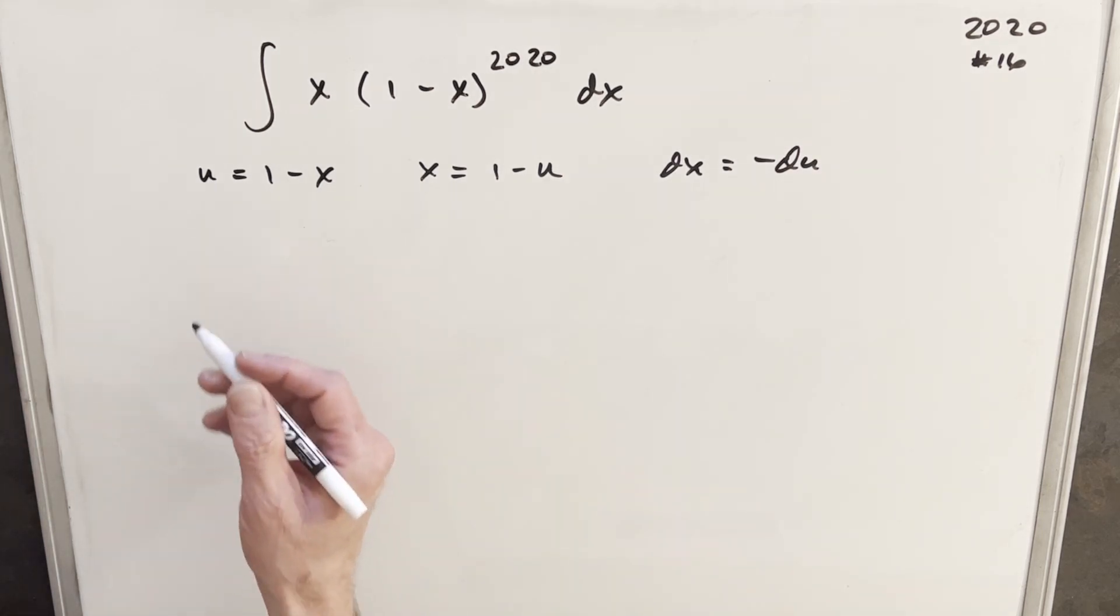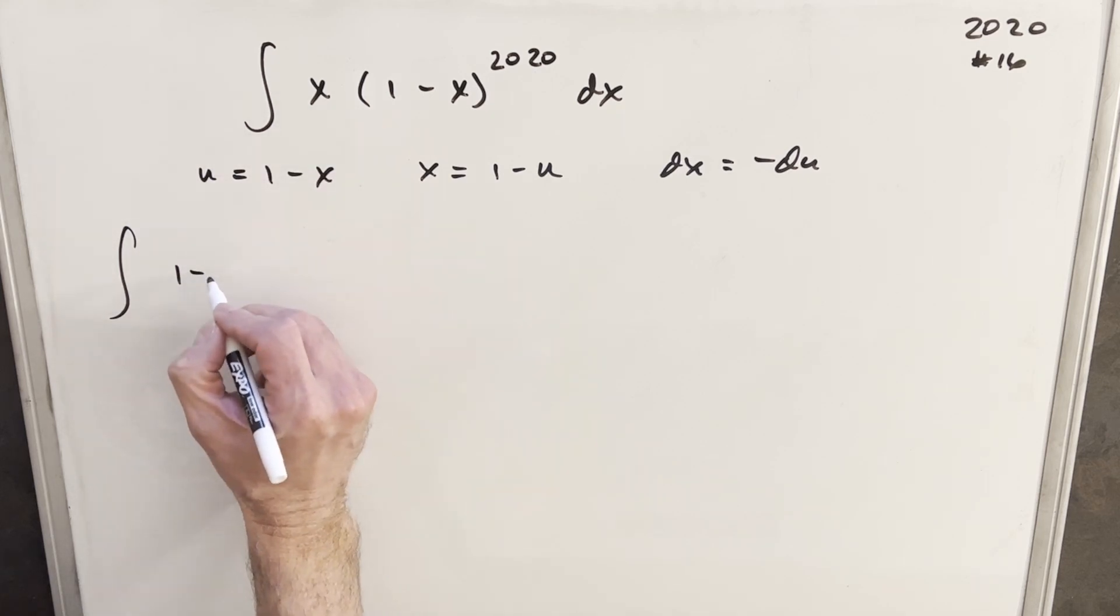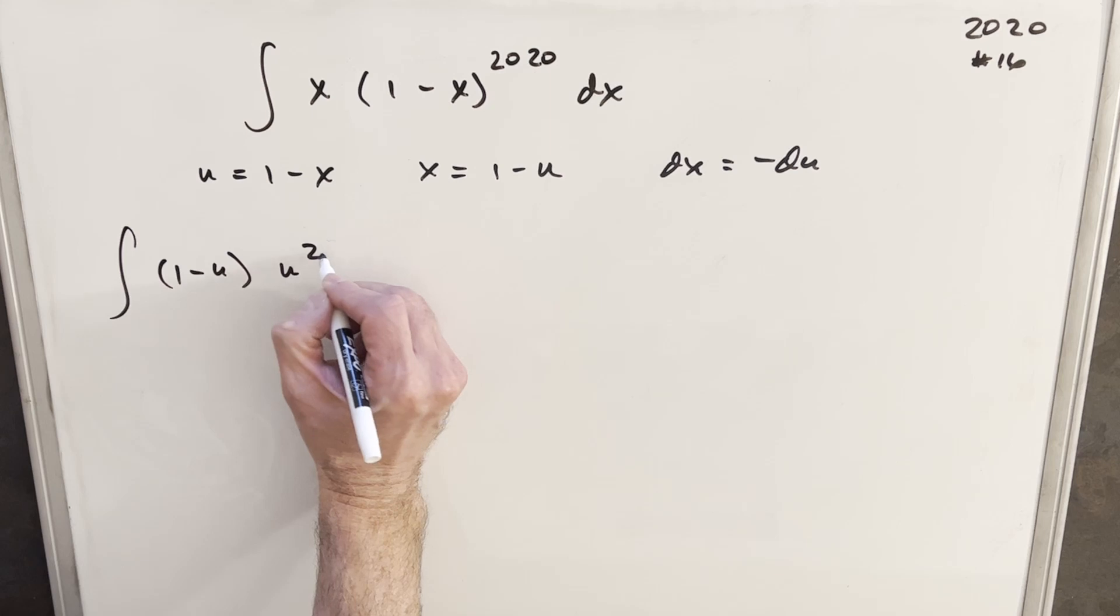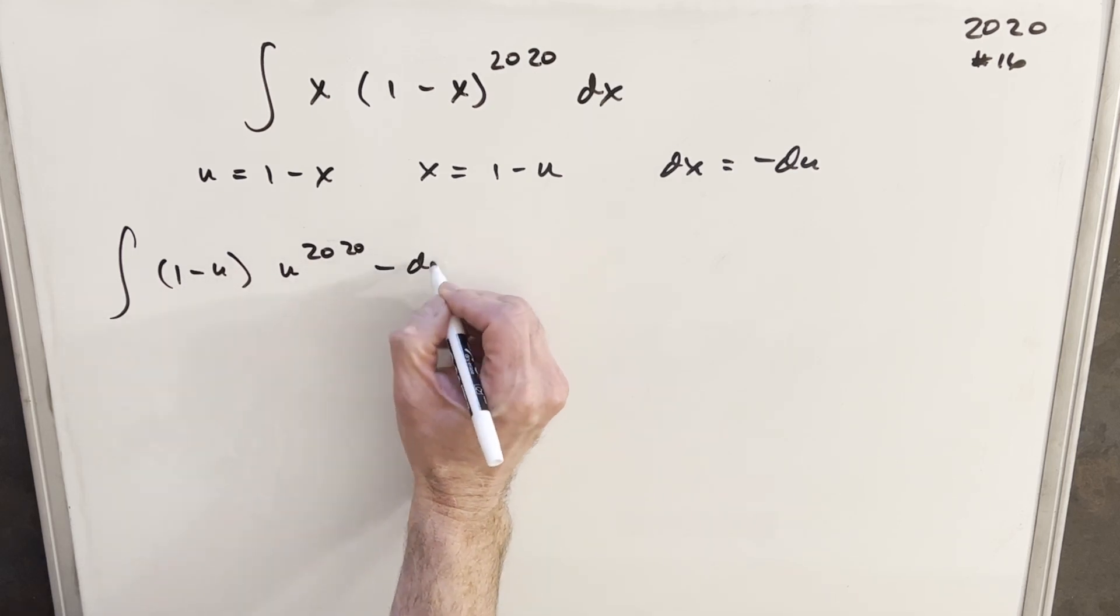So let's see what happens when we do this. We're going to have, for our x value, we're going to have a 1 minus u out front. And then here, we're going to have u to the 2020 and a minus du.